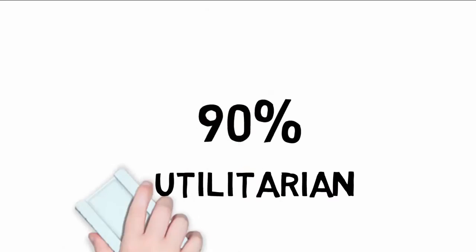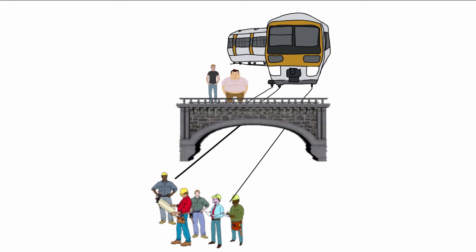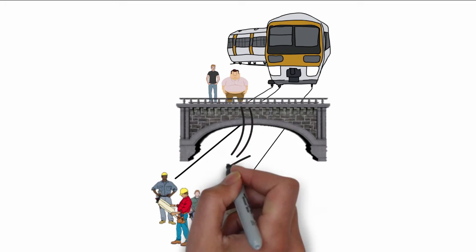Or does it? Now things start to get tricky. We make a small adjustment to your dilemma. This time, instead of a lever used to divert the trolley to another track, you are standing on a footbridge that the trolley will pass under. There is a rather large man standing close to you, and as with the original scenario, there are five people on the track. You quickly assess that the only way to stop the trolley from killing the five is to push the large man off the bridge.